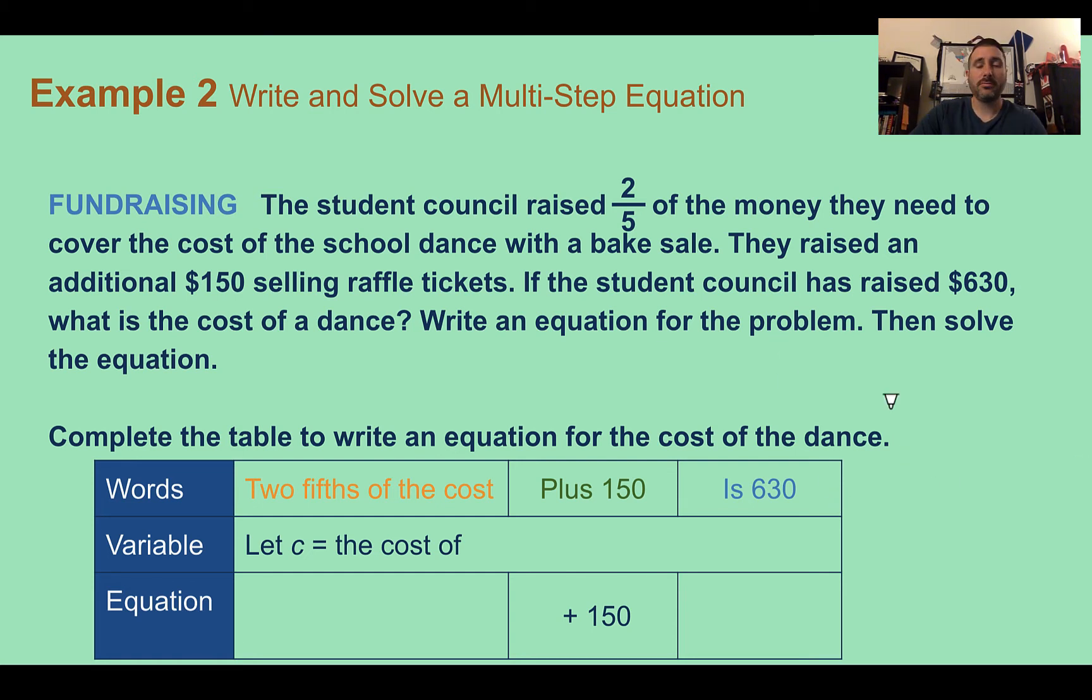So let's complete the table to write the equation for the cost of the dance. So here we're saying c is going to be the cost of the dance. So that's what we want to know, is how much does a dance cost? So to write our equation, it's going to say two-fifths of the cost, so two-fifths c plus that extra $150 that they already have gives us the total of 630. So it equals 630.